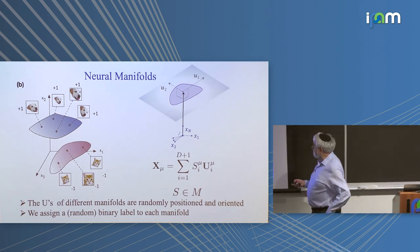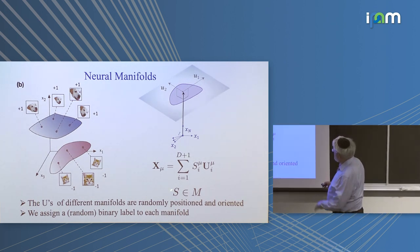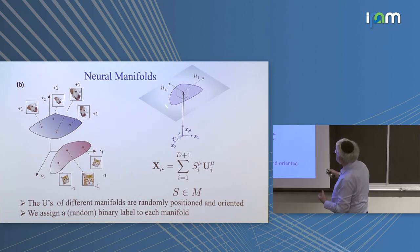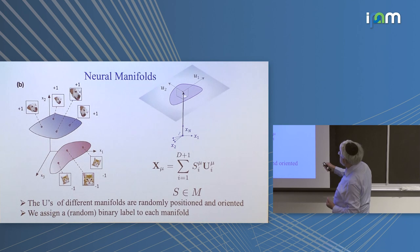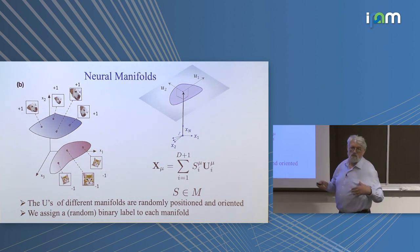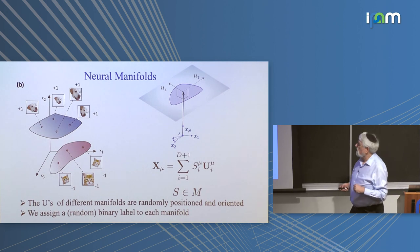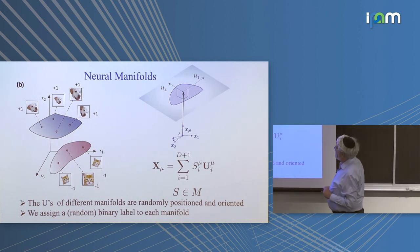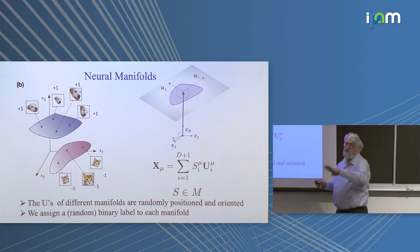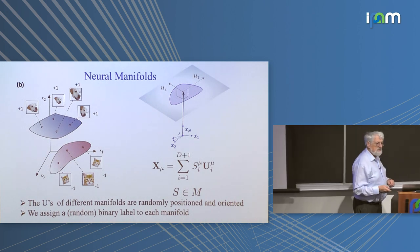For now, we assume that different manifolds have the same geometric characterization — same shape — except that their location and orientation of their subspaces are random. So we have P manifolds in R^N, randomly centered and randomly oriented D-dimensional structures.